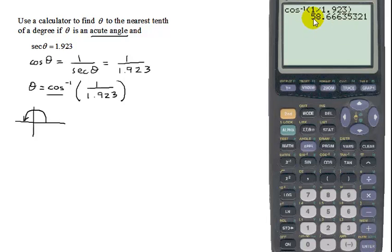My answer is 58.66635, etc. We needed to round it to the nearest tenth. That means this first sixth. The second sixth is going to round that one to a seventh,